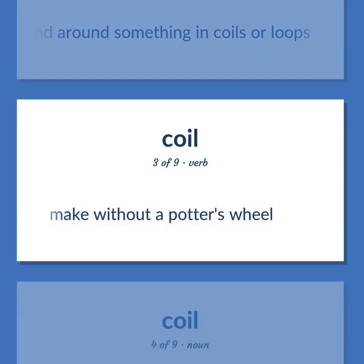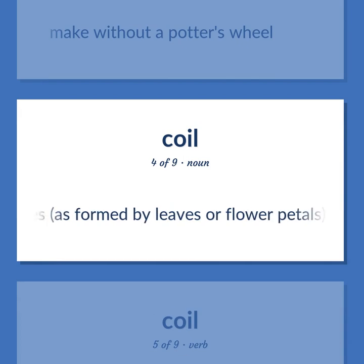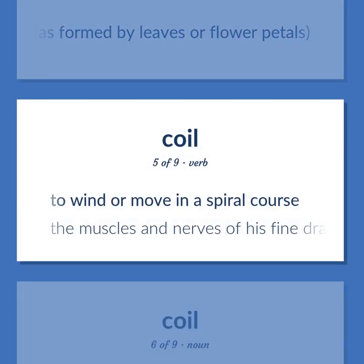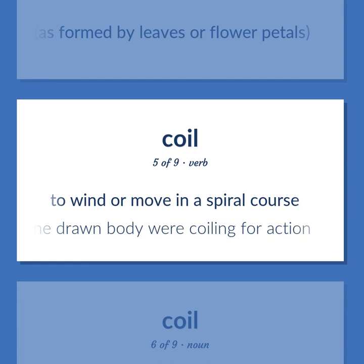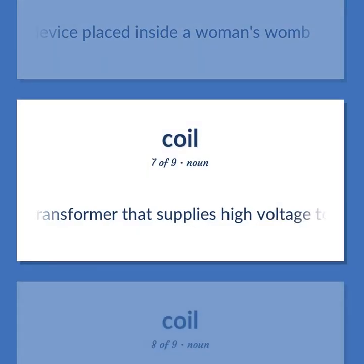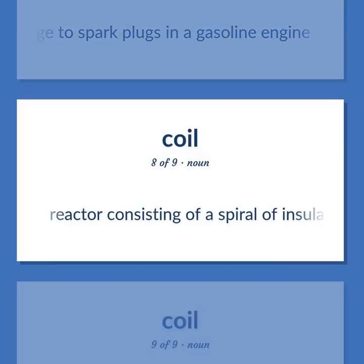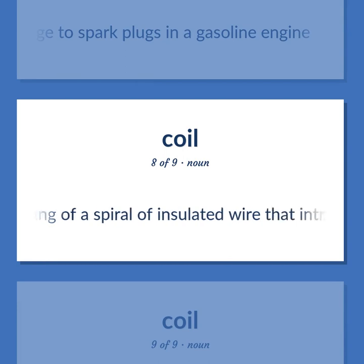Make without a potter's wheel. A round shape formed by a series of concentric circles, as formed by leaves or flower petals. To wind or move in a spiral course — the muscles and nerves of his fine-drawn body were coiling for action. A contraceptive device placed inside a woman's womb. A transformer that supplies high voltage to spark plugs in a gasoline engine.